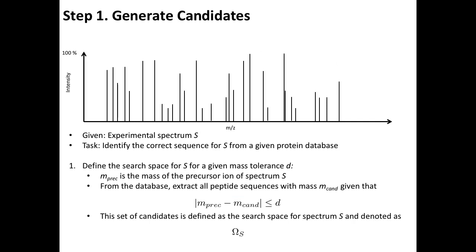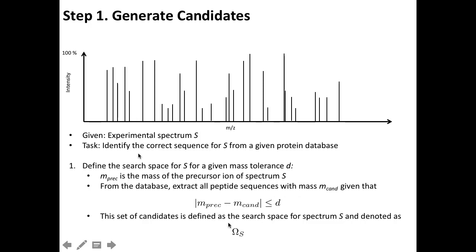How do we generate the candidates? Given an experimental spectrum, we look at the search space for any given mass tolerance Δ. We need to know how accurately we can measure these masses. Once we know that, we go through our database, extract all peptide sequences, and check whether the candidate mass of each tryptic sequence is within the error tolerance of the precursor. All those within tolerance are kept and define the search space for that particular experimental spectrum.